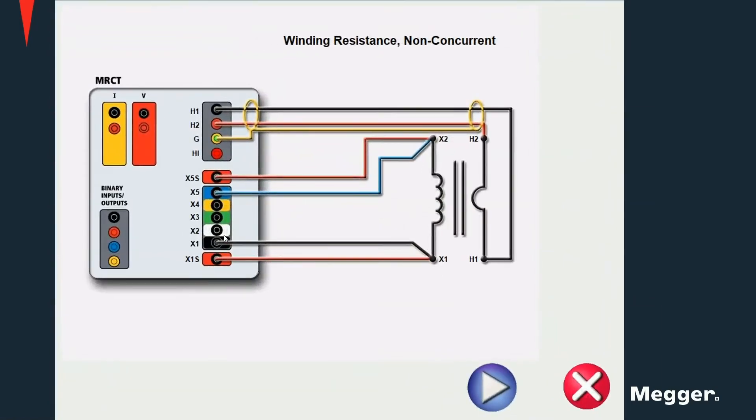For a two-tap current transformer, connect the X1 and X5 terminals to the X1 and X2 terminals on the current transformer as well as the primary side terminals. In this case, we are doing a winding resistance test in which a current is injected into the secondary of the current transformer. A voltage is measured and the resistance is calculated as the ratio of the voltage and current.